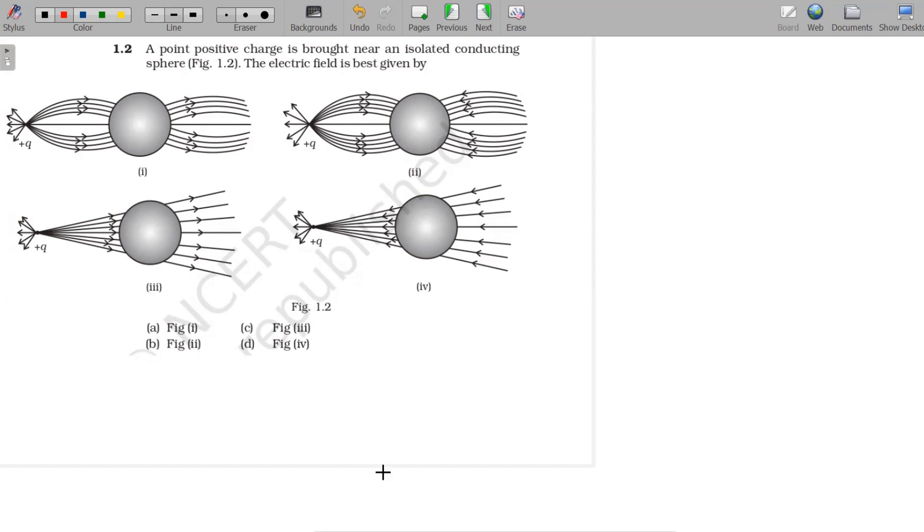A point positive charge is brought nearer to an isolated conducting sphere. A positive point charge, we should take it as a sphere. Point charge is spherical in shape. We are bringing it nearer to a good conducting sphere.